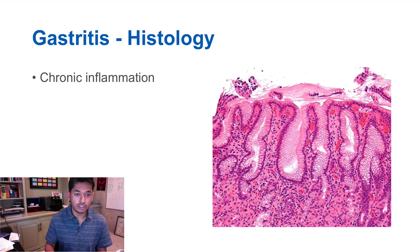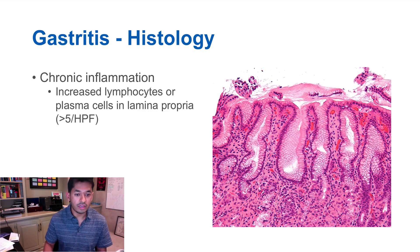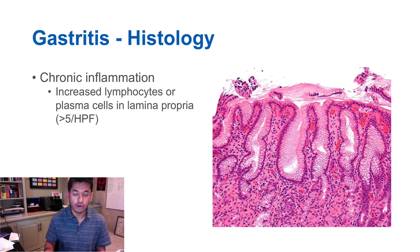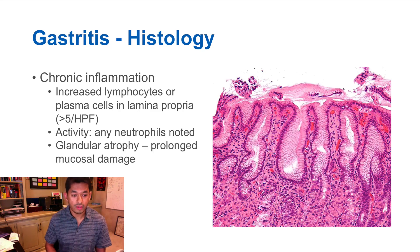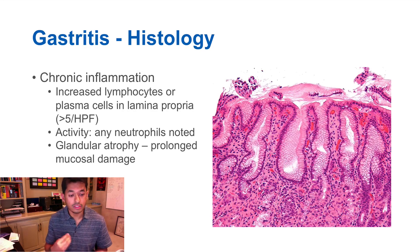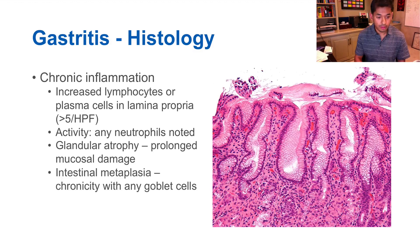Looking at the histology for gastritis, you see chronic inflammation — inflammatory cells within the biopsy. You have increased lymphocytes or plasma cells within the lamina propria, which is the first layer, and that's a marker for active inflammation. You may also see neutrophils as a sign of activity. You may have glandular atrophy from prolonged mucosal damage, and if that insult continues, glandular atrophy can eventually form into what's called intestinal metaplasia — when goblet cells are seen — which is a precancerous etiology we'll discuss later in this lecture.